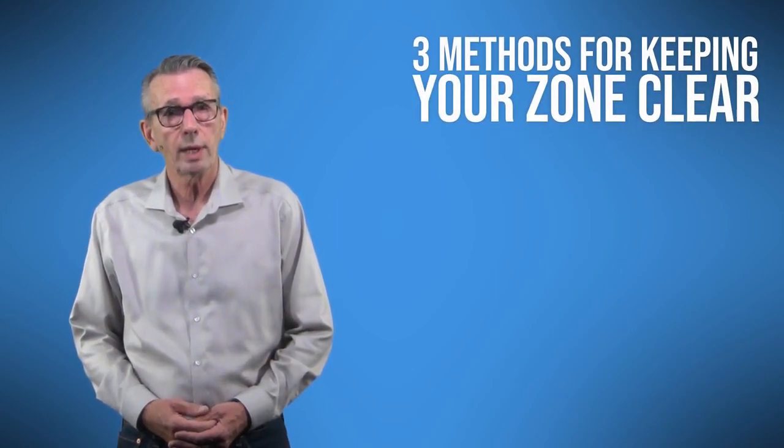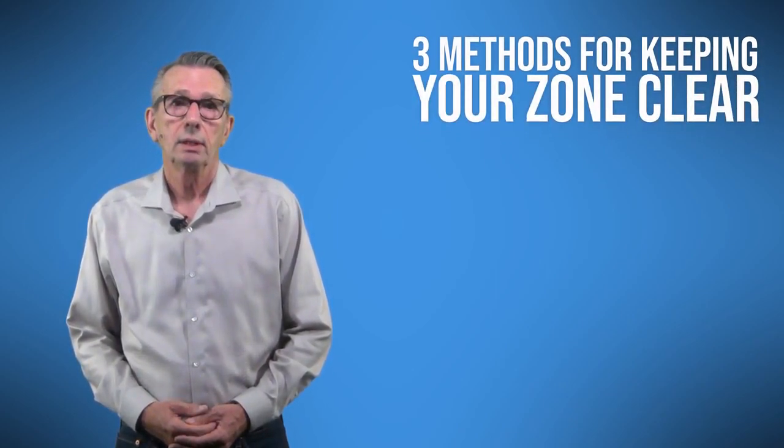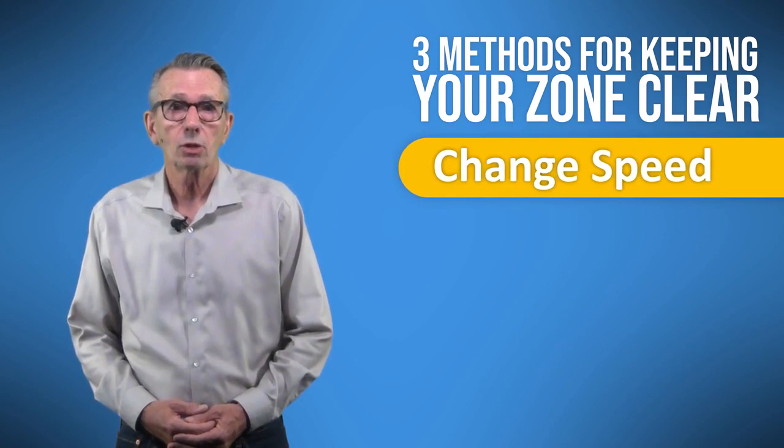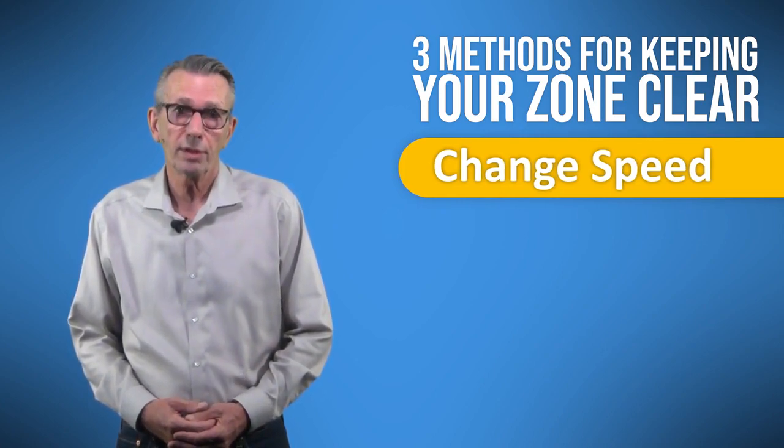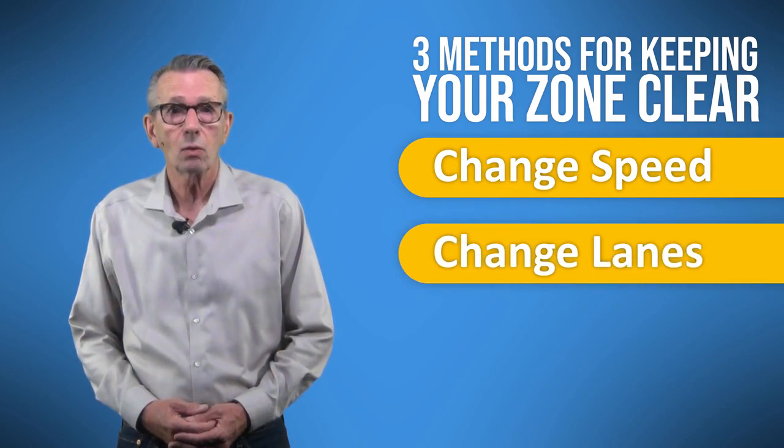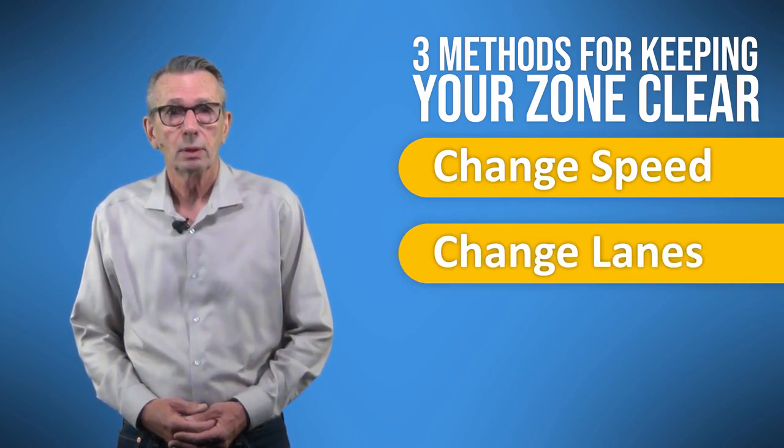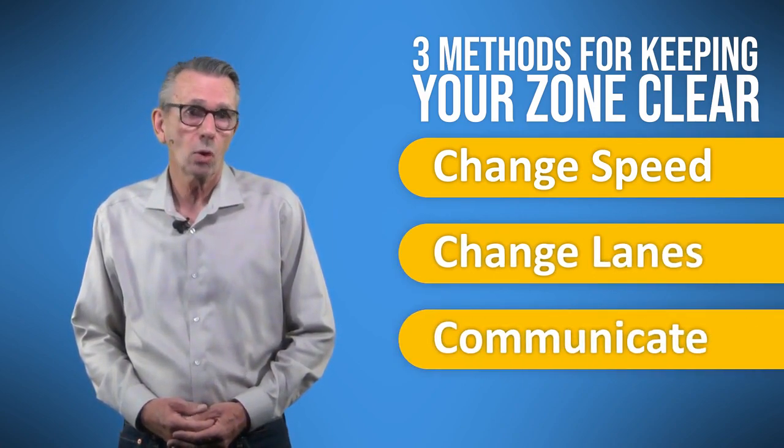When a zone is blocked or changing, there are three ways to restore it to a clear status. You can change speed, either by slowing or speeding up within the limits. You can change lanes or lane position. Or you can communicate with other road users.